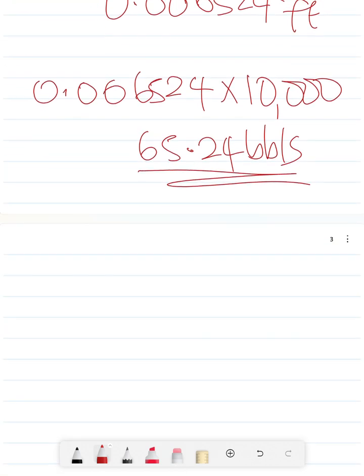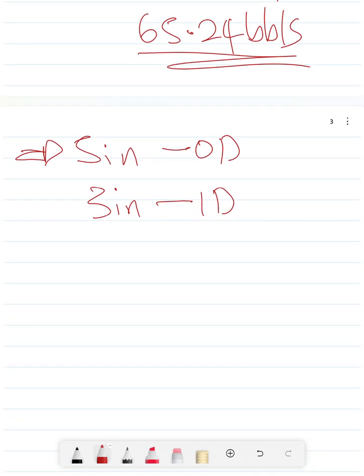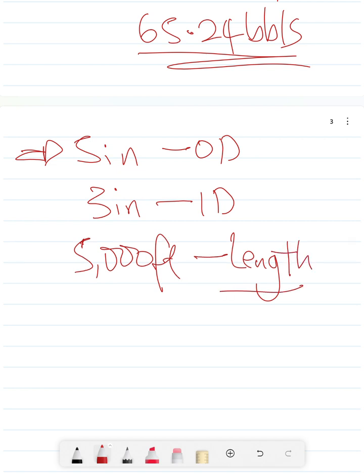Let's look at a practice example for you to try at home. Say you have a 5 inch pipe OD and the ID is 3 inches, and it's in a 5,000 feet length hole. See what you get having done the calculation. Thank you very much for listening, bye for now.